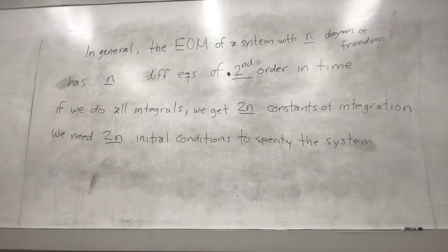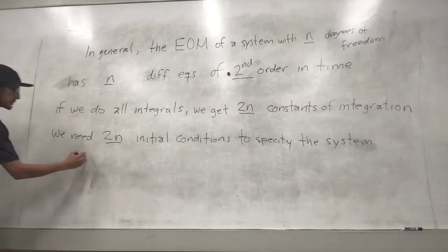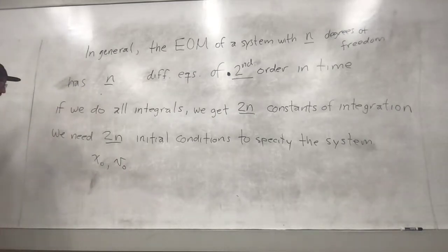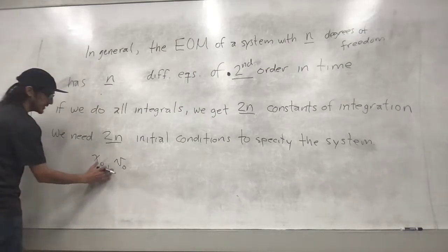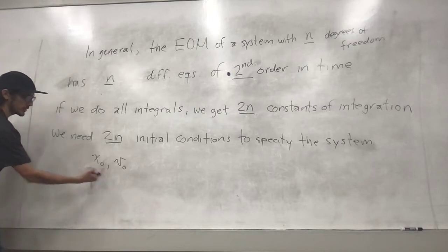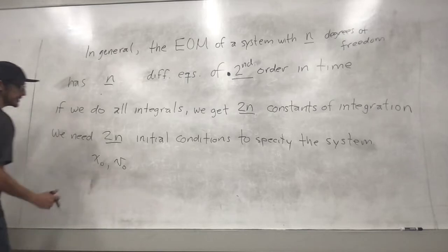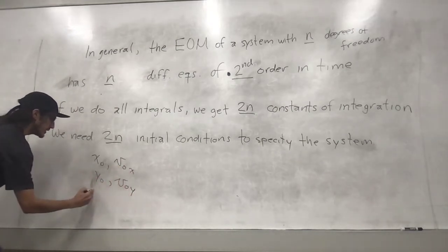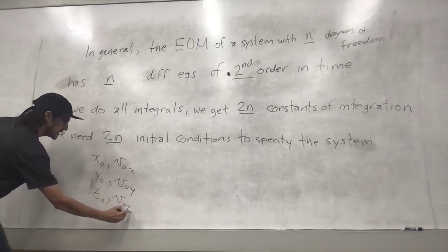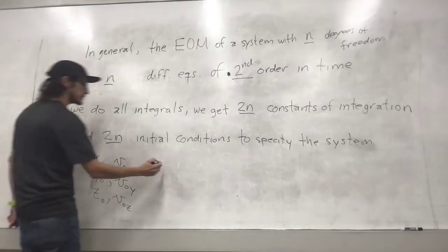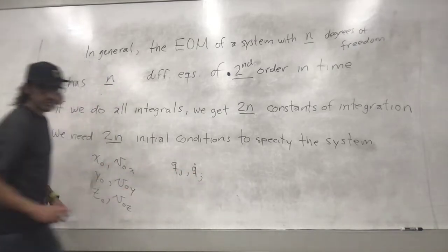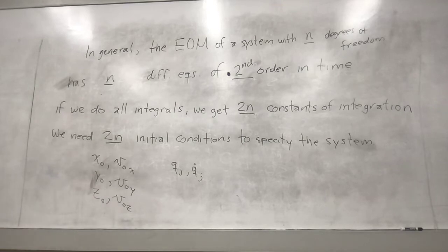These initial conditions are going to be the initial position and the initial velocity in each of the components x, y, and z. Using generalized coordinates, it will be qj and q̇j for each j. This sounds like a lot of work.